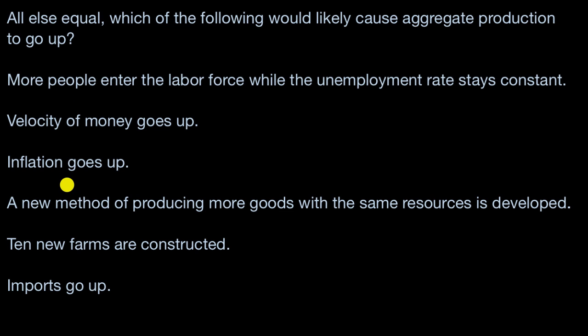Alright, now let's work through this together. This first one says more people enter the labor force while the unemployment rate stays constant. Well, labor is an important factor of production. And if more people enter the labor force and the unemployment rate stays the same, that means that the absolute number of people who are working goes up.